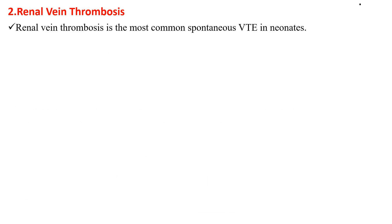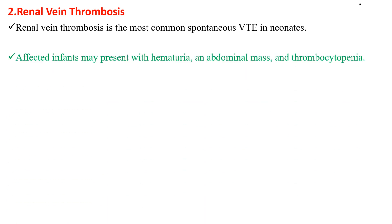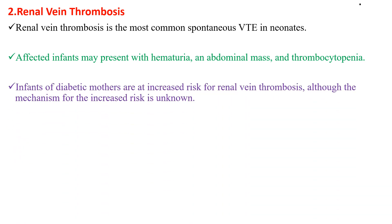The other is renal vein thrombosis, which is the most common spontaneous venous thrombosis in neonates. Affected infants may present with hematuria, abdominal or flank mass, and thrombocytopenia. Sudden onset of hematuria, flank mass, and thrombocytopenia is highly suggestive of renal vein thrombosis in neonates. Infants of diabetic mothers are at risk, though the mechanism is unknown. Approximately 25% of cases are bilateral.